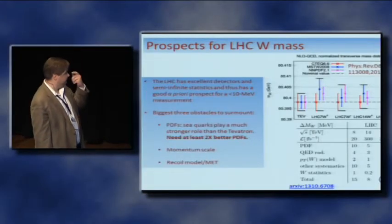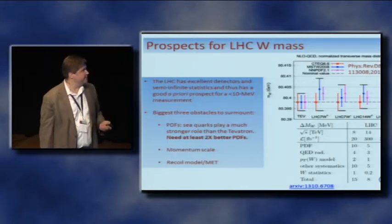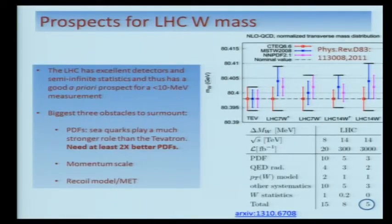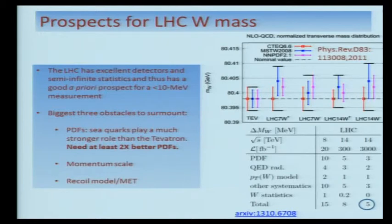Meanwhile, in Geneva, the LHC has long coveted to do the same thing. They have excellent detectors and tens of millions of W candidates, but there are three problems to solve. The biggest is PDFs: sea quarks and gluons play a much stronger role in W production at the LHC, and to get 10 MeV precision or better, we'll need to know them at least twice as well as we currently do. Momentum scale requires as much work as the Tevatron has done, and that work is not yet accomplished. The recoil model and missing energy are also challenging due to large pileup. But optimistically, the ultimate goal could be as low as 5 MeV — though it's a pretty long road to get there.